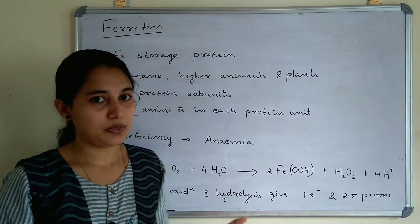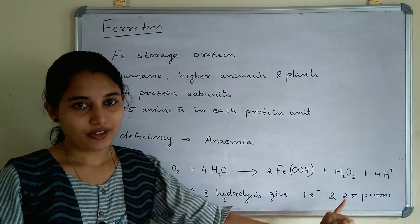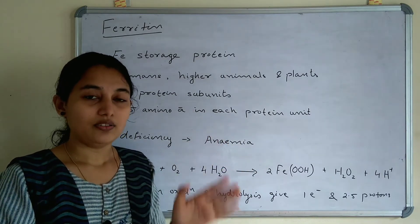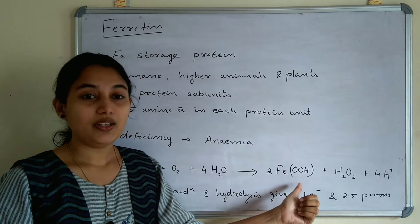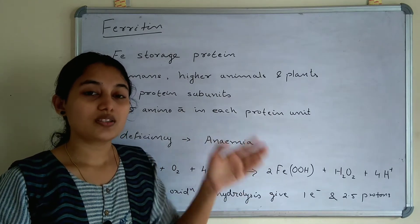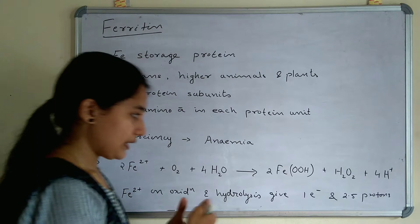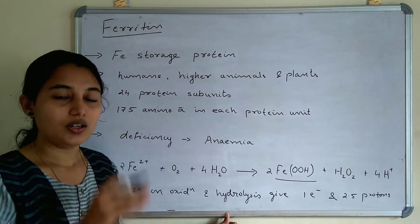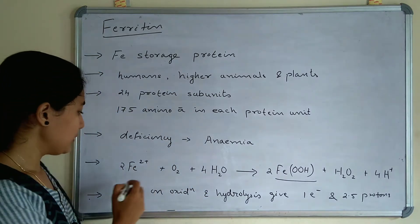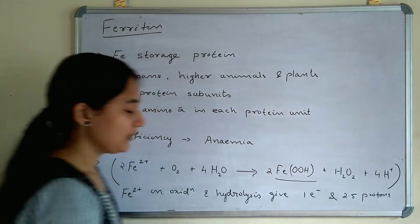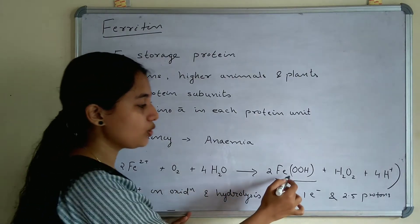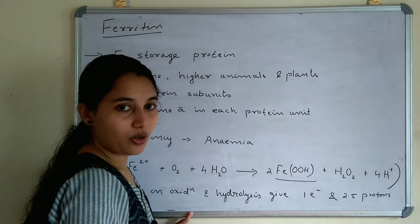Iron is stored in ferritin in the form of FeOOH. FeOOH is the structural formula of iron as stored in ferritin. The reaction in ferritin is: Fe2+ is oxidized with O2 and 4H+ to give 2 FeOOH plus hydrogen peroxide and protons.